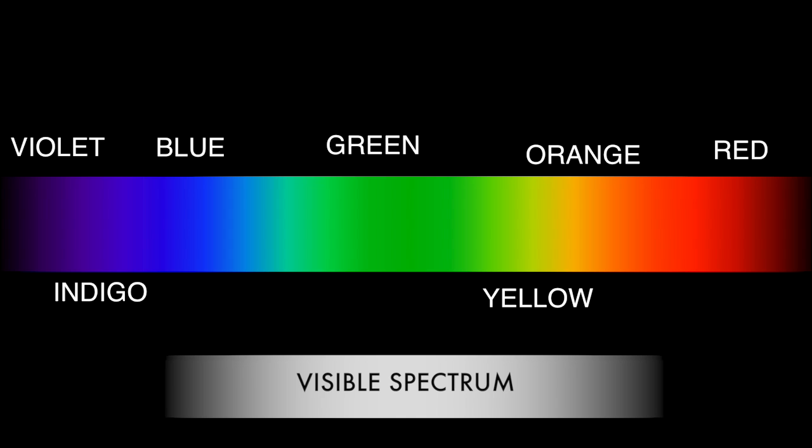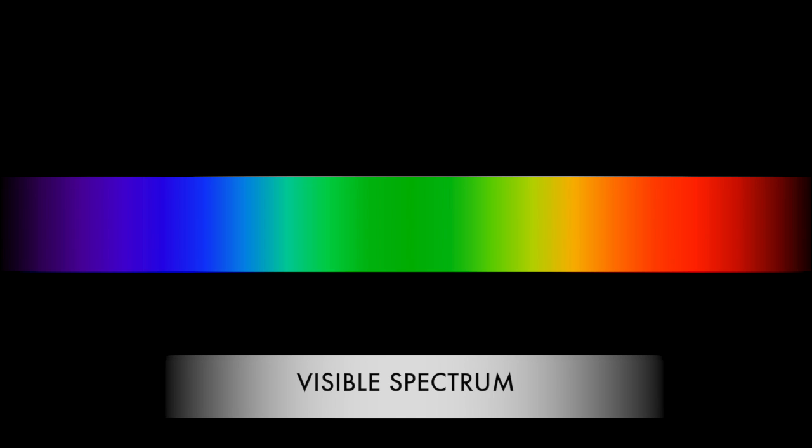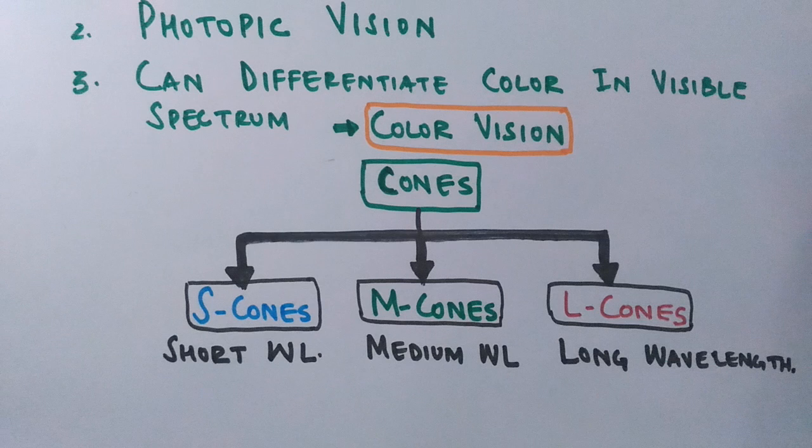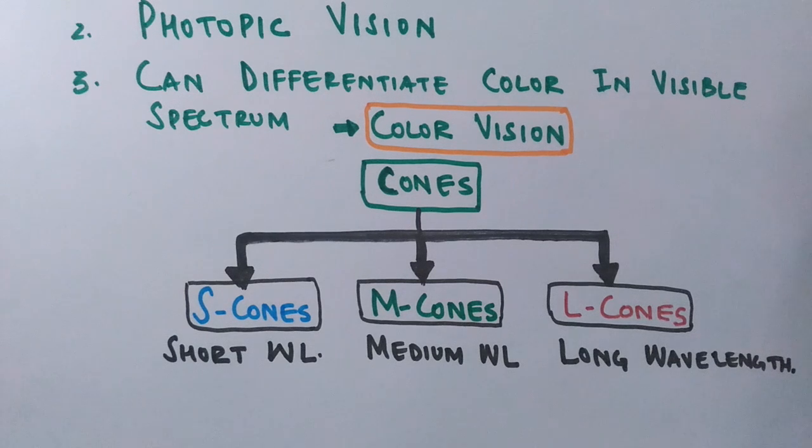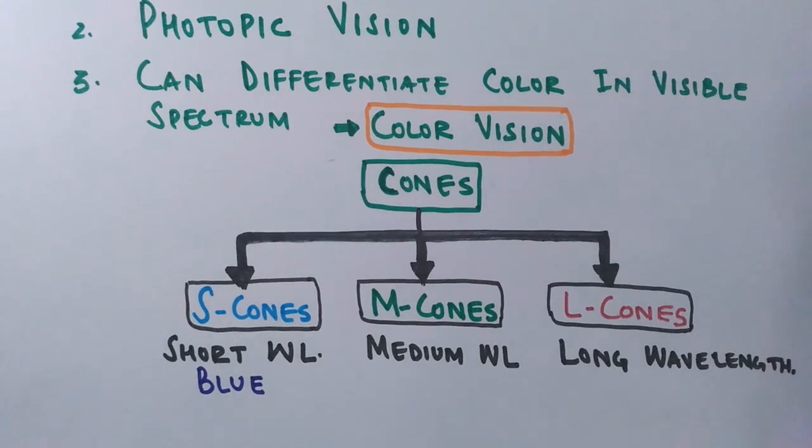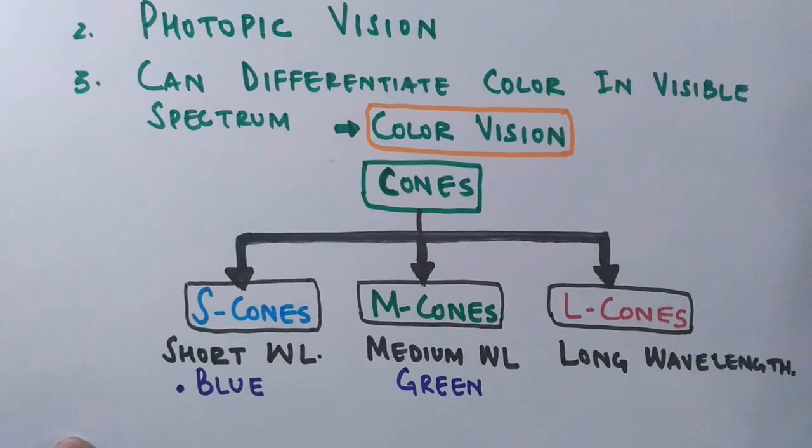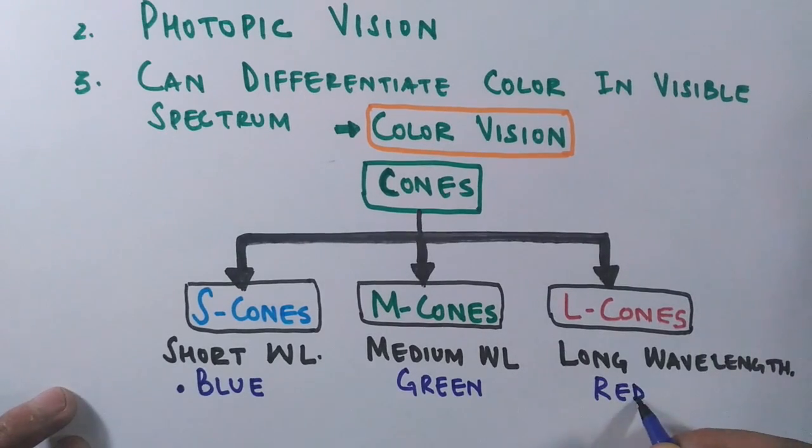This is the color range of visible spectrum, but all the colors are not received by cones. It's the primary colors that are blue, green, and red, or we can say RGB, that are received by these three cones. Blue, having the short wavelength, will be received by the S cones. Green will be received by the M cones, while the L cones will receive the red light because red has the highest wavelength.